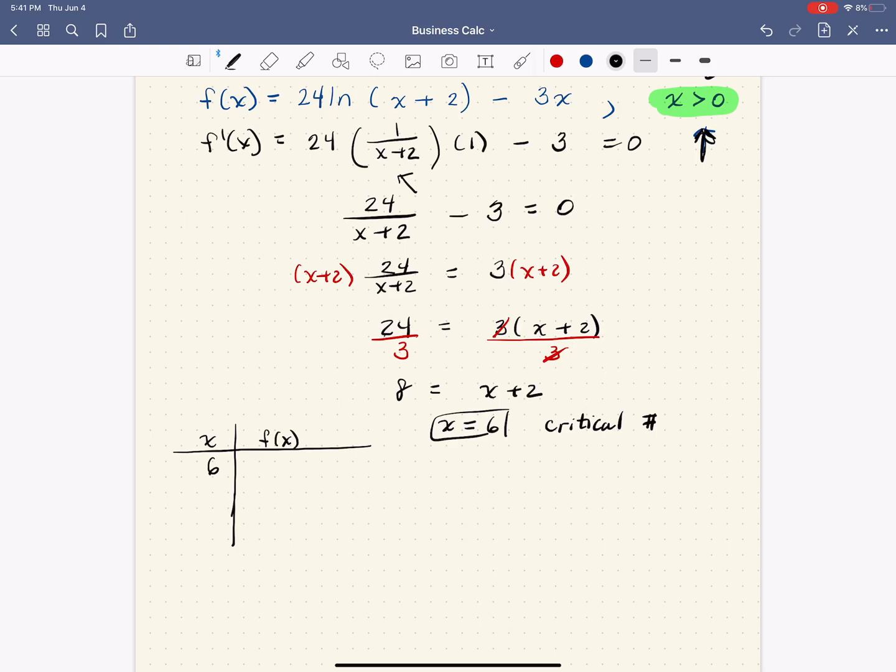So you can pick anything you want to, something below 6, I'm going to pick 1 because it's easy to plug in, and I'm going to pick 10 because again, that's easier to plug in. So if I plug in x equals 6, and remember our original function is 24 natural log x plus 2 minus 3x.